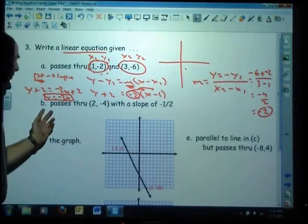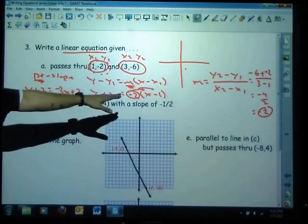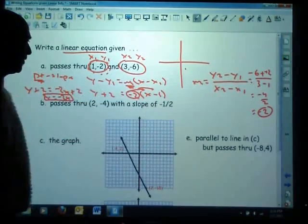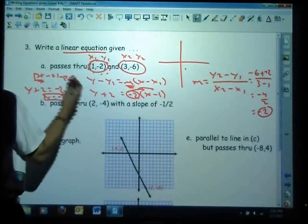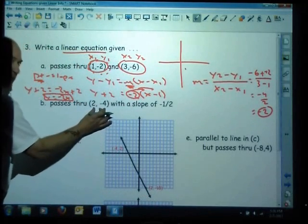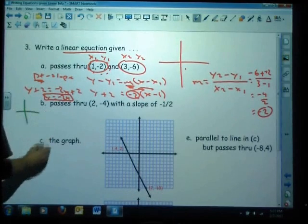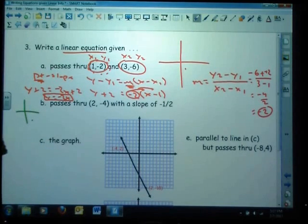Now if you notice letter B, it says it passes through this point and it has a slope of this. Again you've got to ask yourself, is this a y-intercept? And no, it's not.